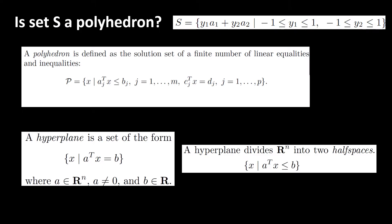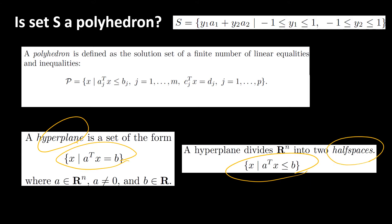A polyhedron is the common solution set of a bunch of linear equalities and linear inequalities, where the solution set of a linear equality is a hyperplane, and the solution set of a linear inequality is a half-space. If you do not know what a hyperplane or half-space is, please refer to my video on them — I'll put a link in the description below.